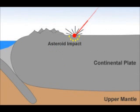Considering the heat and pressure required to form diamonds, this next example is pretty rare: an asteroid that impacts the Earth with enough force to create some diamonds. There has been evidence of diamonds at asteroid impact sites, but this one is pretty rare and not all that common.